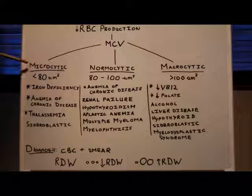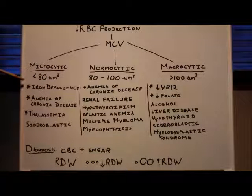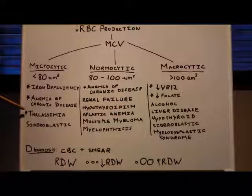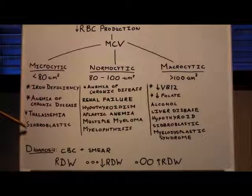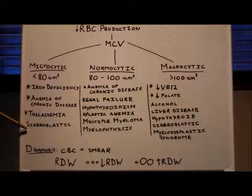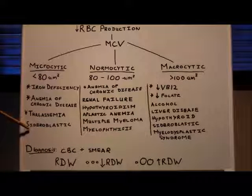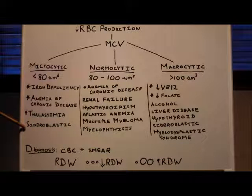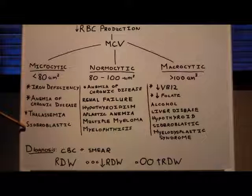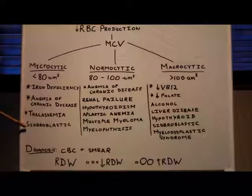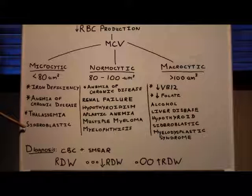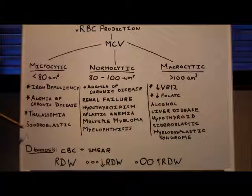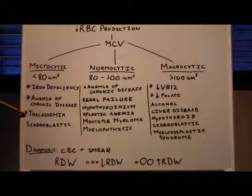I'm going to start with the microcytic anemias. Microcytic anemias include iron deficiency anemia, anemia of chronic disease, thalassemia, and sideroblastic anemia. Sideroblastic anemia is quite rare - it's a defect that causes iron to accumulate in the mitochondria. It can be either inherited or acquired. Acquired causes of sideroblastic anemia include lead intoxication and some medications, such as isoniazid, which is used to treat tuberculosis.